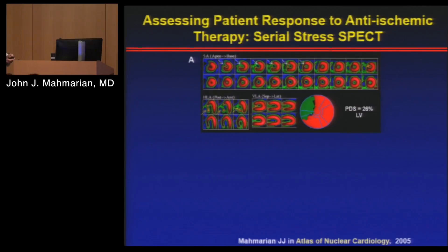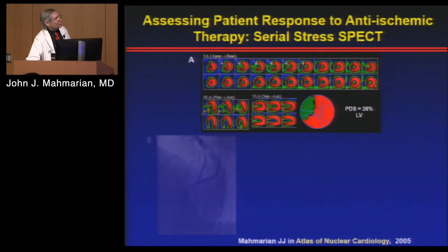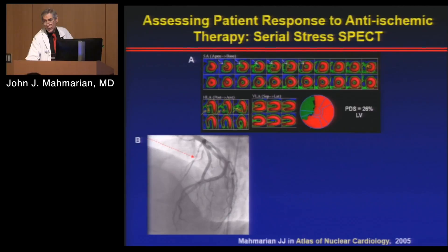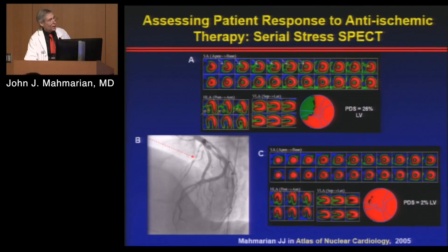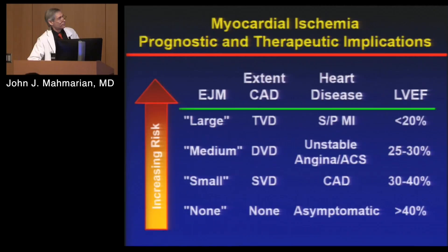Serial imaging can help guide outcomes. One patient had a 26% perfusion defect and on angiography had diffuse disease in a very large septal perforator — not amenable to revascularization. We treated the patient with nitrates, beta blockers, and calcium channel blockers, and brought him back several months later. The scan was totally normal. So we can actually track risk and changes based on serial imaging — a very important aspect of what we do.